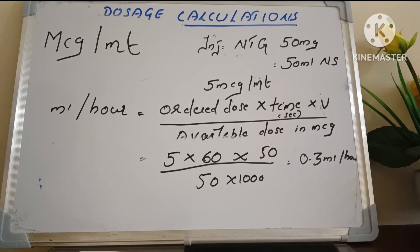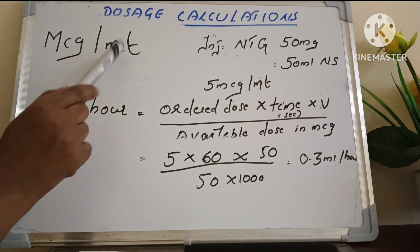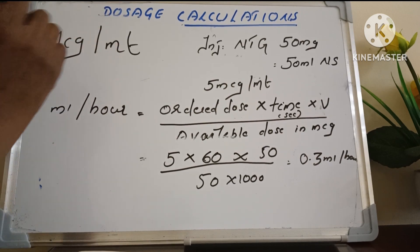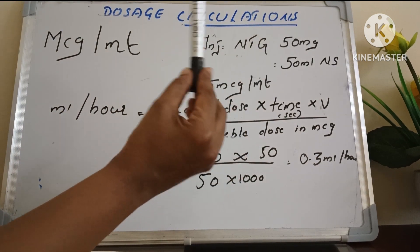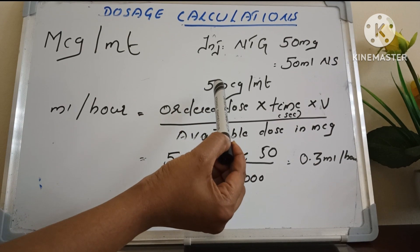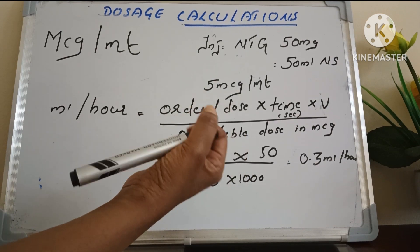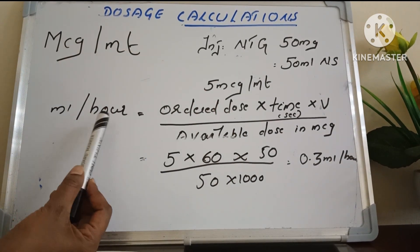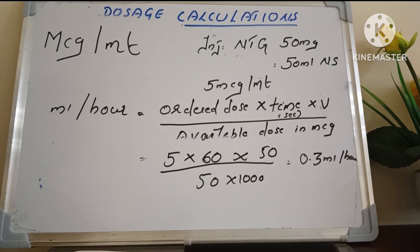Hi everyone, today we are going to discuss about some of the dosage calculations — IV drip in microgram per minute. A physician places an order for injection nitroglycerin 50 mg in 50 ml, to be administered at 5 microgram per minute. We have to see how many ml per hour the medication has to be administered for the patient.